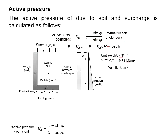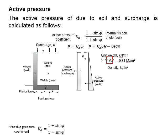The equations to calculate the active pressure are given here. The active pressure due to the surcharge is a function of Ka times the surcharge load. As for the soil material, it is Ka times the unit weight times the depth of the retaining wall. The unit weight is obtained by multiplying the density with the gravitational coefficient 9.81.